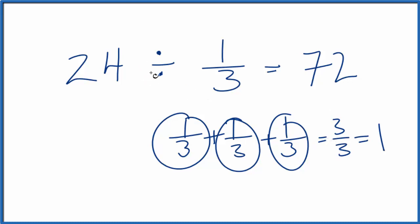You could also find a common denominator for 24 and 1/3 and do the math like that. The way I like to do it, though, is like this.